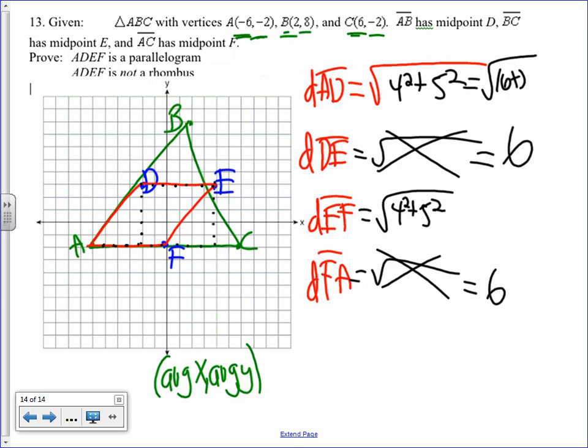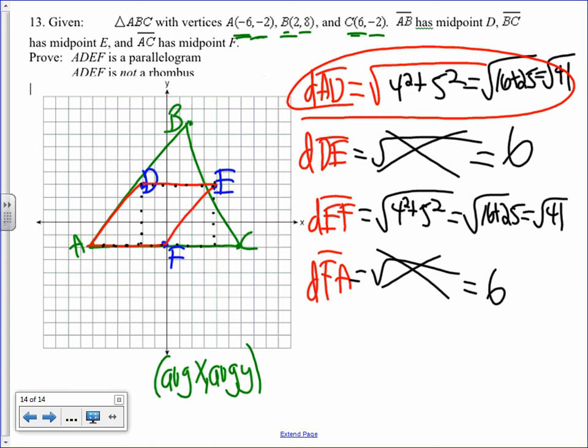Again, FA I don't have to do the radical because it's a straight line. 1, 2, 3, 4, 5, 6. 16 plus 36 equals radical 52. 16 plus 25 equals radical 41. There's the work. Now to prove it's a parallelogram, I need opposite sides congruent. I have two pairs of opposite sides congruent.